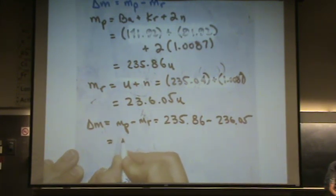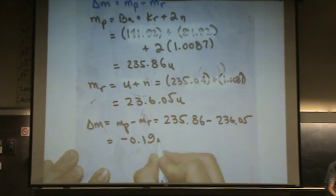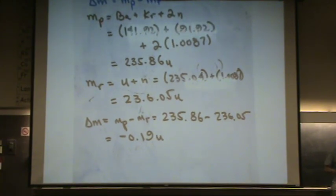What that means, I have a loss of mass when this reaction occurs. If there's a loss of mass, it must have been converted to energy. So energy is given off, and that's what we expect for a fission reactor.